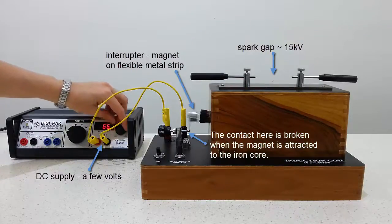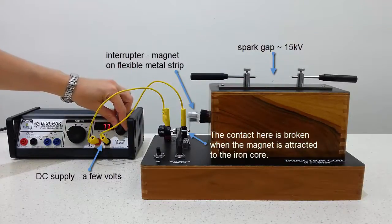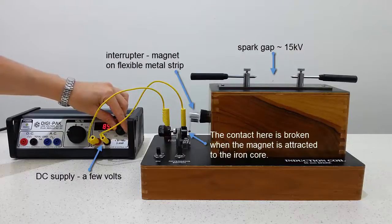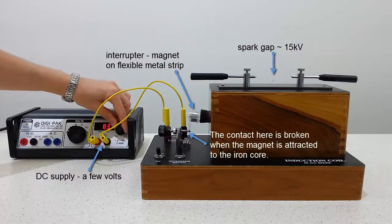In the particular induction coil shown, this process happens about 30 times a second. The voltage produced in the secondary coil is about 15 kilovolts, which is sufficient to produce arcing across about 5 centimeters of air.